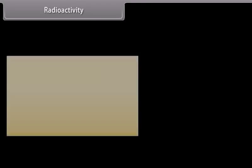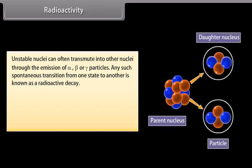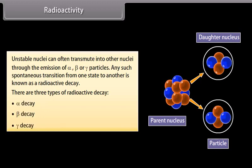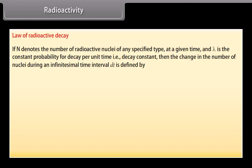Radioactivity. Unstable nuclei can often transmute into other nuclei through the emission of alpha, beta, or gamma particles. Any such spontaneous transition from one state to another is known as a radioactive decay. There are 3 types of radioactive decay: alpha decay, beta decay, and gamma decay. Law of radioactive decay: If N denotes the number of radioactive nuclei of any specified type at a given time, and lambda is the constant probability for decay per unit time, that is decay constant, then the change in the number of nuclei during an infinitesimal time interval DT is defined by...